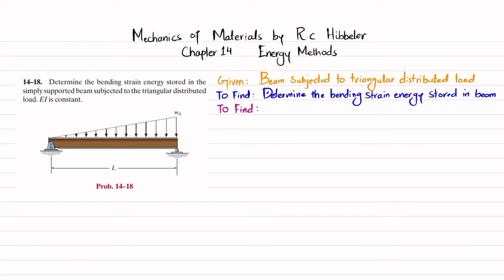Let's start with the solution. As we know, the bending strain energy U_i is equal to the integral from zero to L of M² dx divided by 2EI. We will find the moment M.